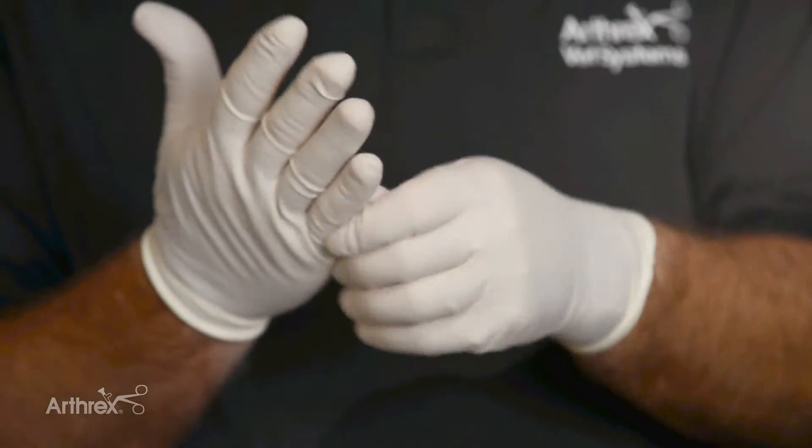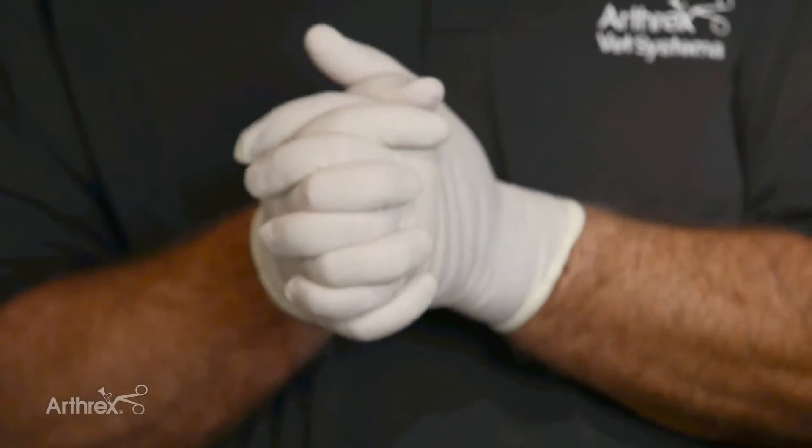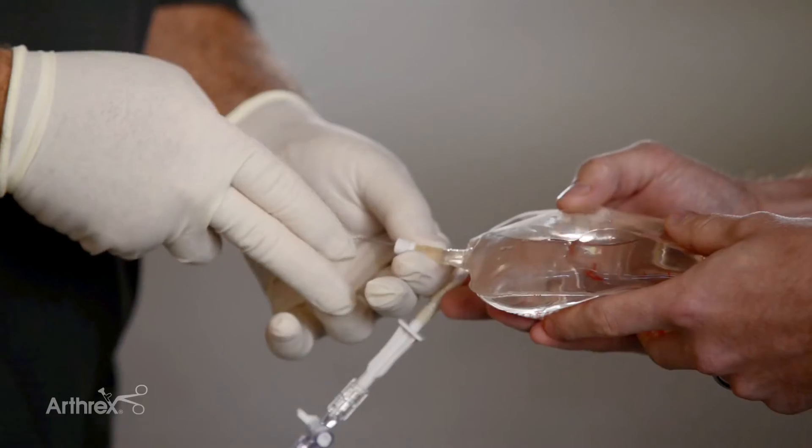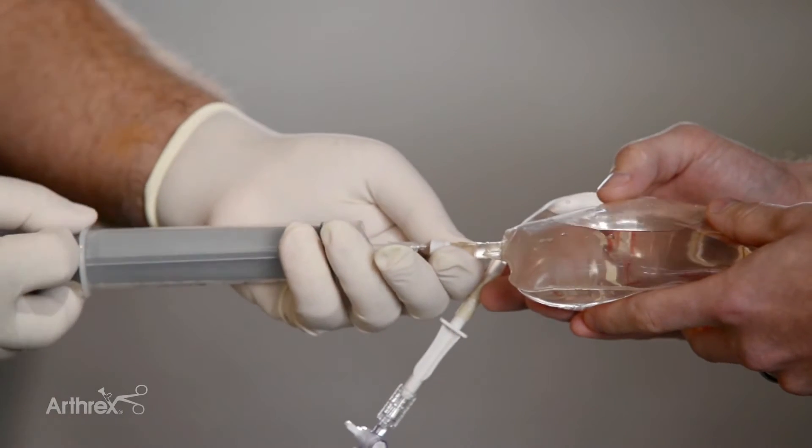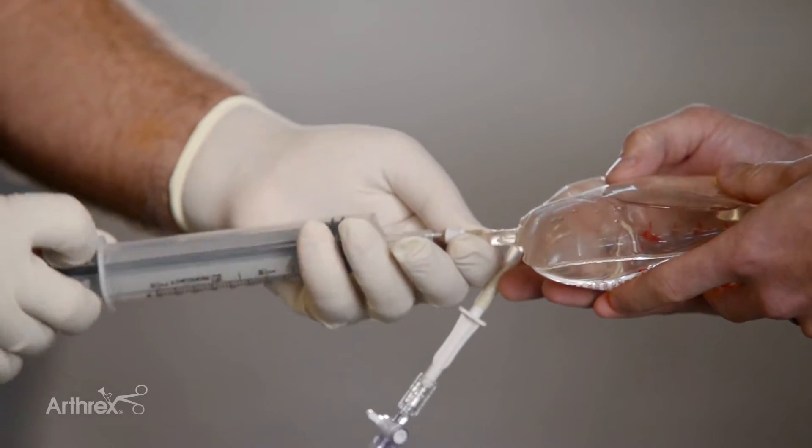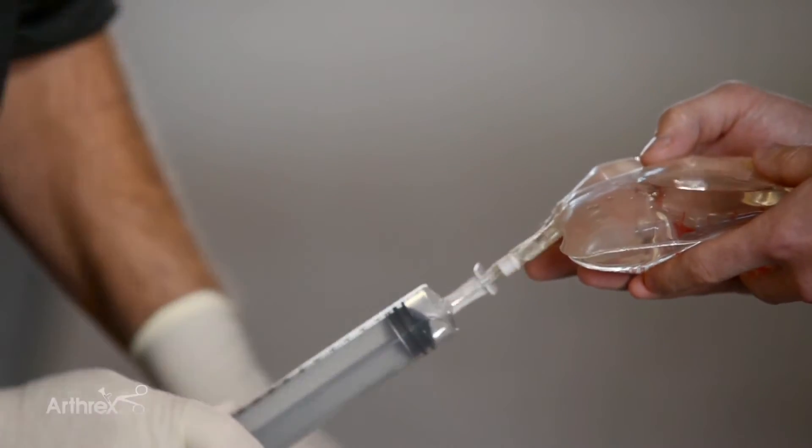With the Angel system we can draw as much as 540 cc's of blood because each cycle we can use up to 180 and we can do that three times. So what we need to do is a ratio of 7 to 1 for the ACDA to whole blood. Seven parts whole blood, one part ACDA.